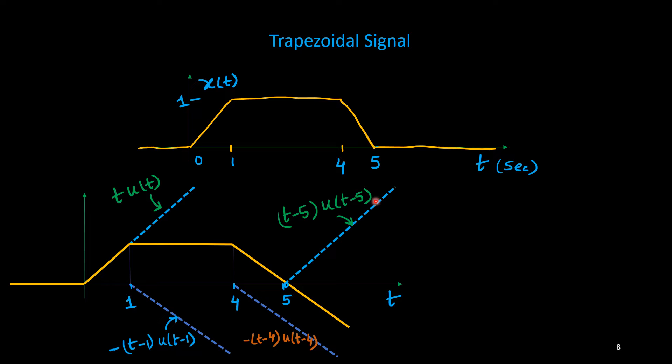Now if I add all these components, this means that these four components if I combine, I will get this trapezoidal signal. So x(t) we can write as t·u(t) minus (t-1)·u(t-1) minus (t-4)·u(t-4) plus (t-5)·u(t-5).